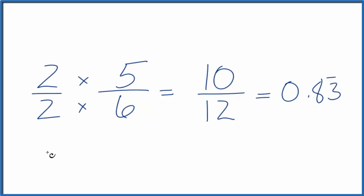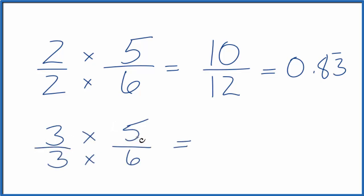Let's do another one. How about 3 over 3? Again, 3 divided by 3 is 1. We're not changing the value. But we have 3 times 5, that's 15. 3 times 6, that's 18.